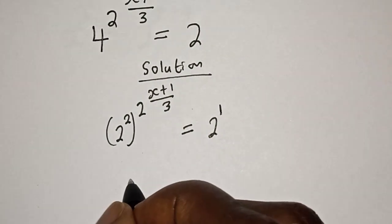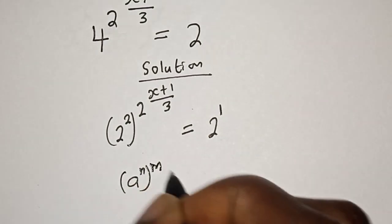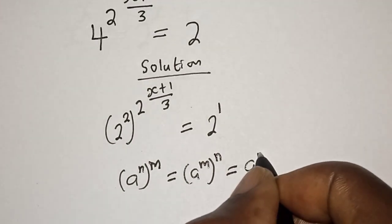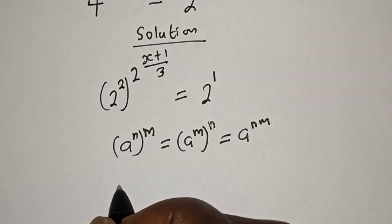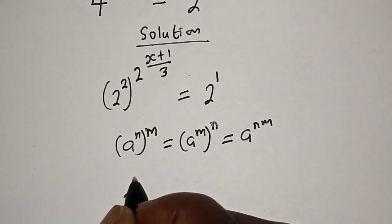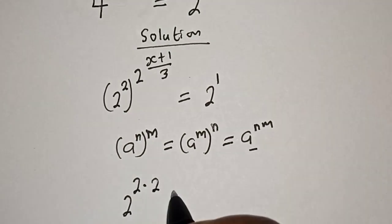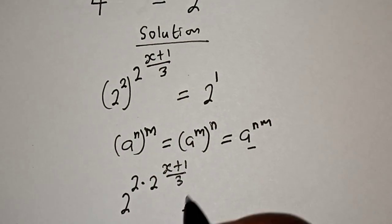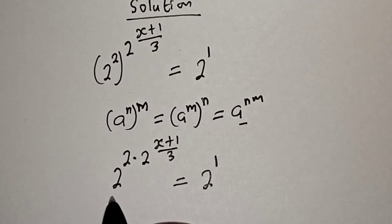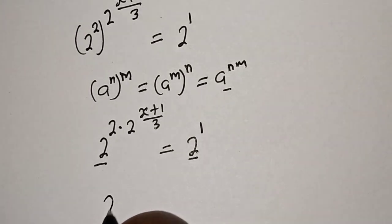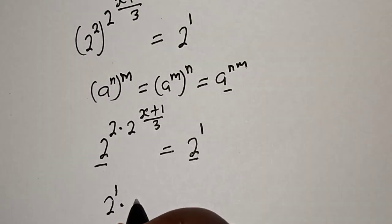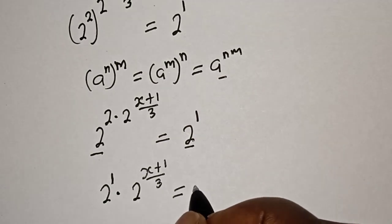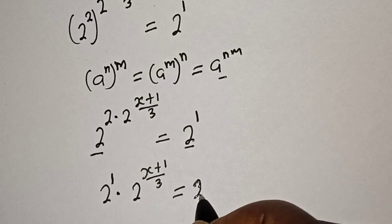Take note of this rule: if you have a raised to the power n, raised to the power m, this equals a raised to the power of m times n. Applying this, we get 2 raised to the power of 2 multiplied by 2 to the power of x plus 1 over 3, equal to 2 raised to the power of 1. Then, 1 multiplied by 2 raised to the power of x plus 1 over 3 equals 1, which is the same as 2 raised to the power of 0.